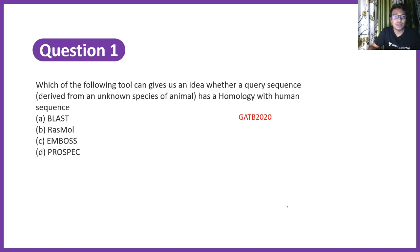Question one says which of the following tool can give us an idea about whether a query sequence derived from unknown species or animal has a homology with human sequence? BLAST, RasMol, EMBOSS, or ProSPECT? Let me quickly give you the answers and then I'll explain it to you. So the correct answer would be BLAST.